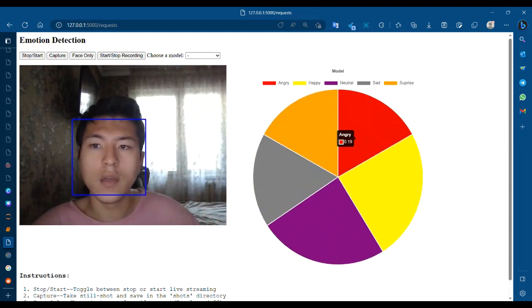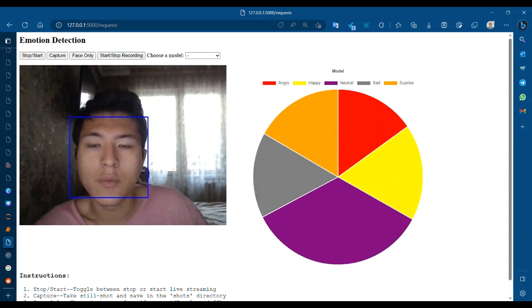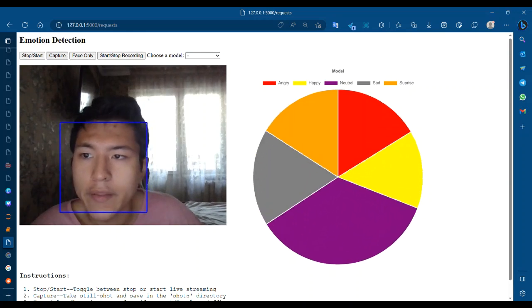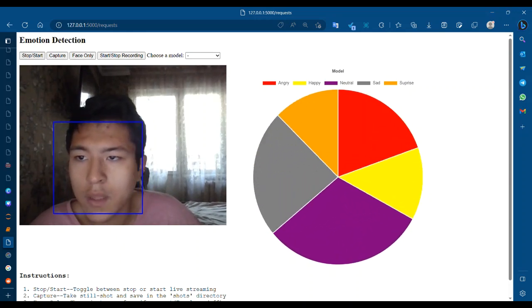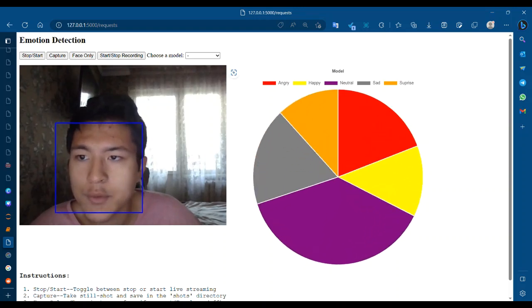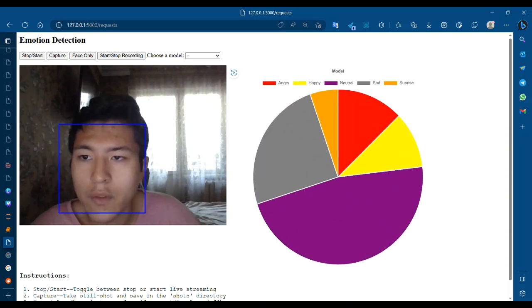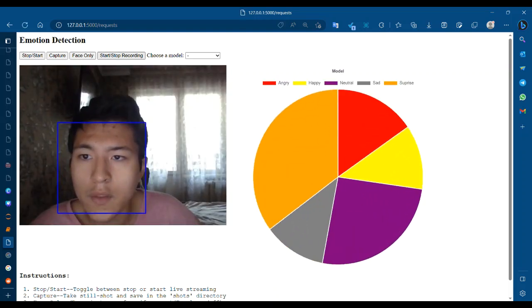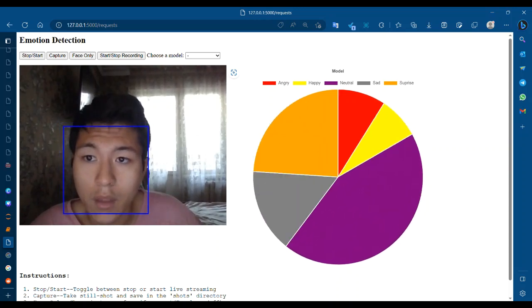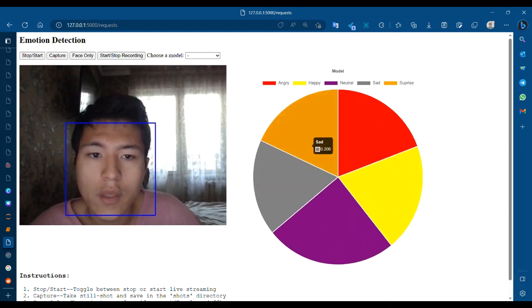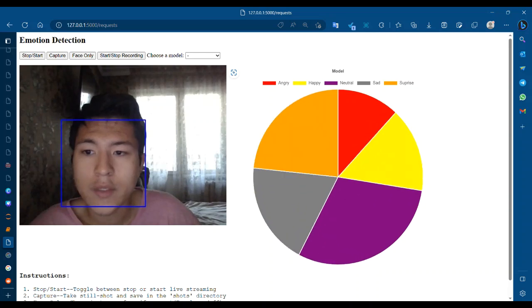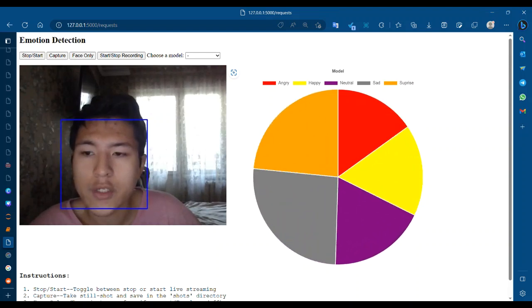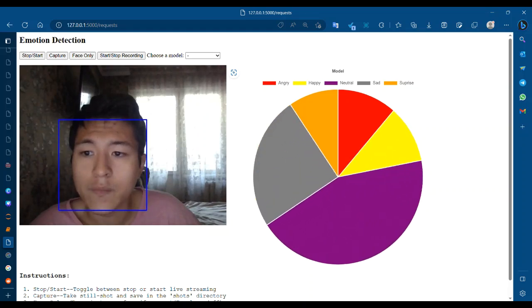Hello everyone again. Here is a presentation of the Flask application that was built for the emotion cognition project. As you can see, here is a website which has several options like stop and start predicting, capture my face which is basically doing screenshot of this little box, face only which recognizes only your face. Start and stop recording is a recording of this screen, but I'm doing recording right now so I will not do it.